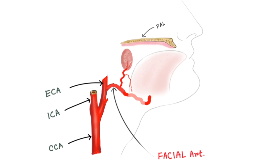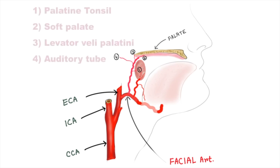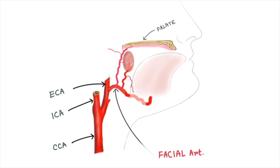The ascending palatine artery runs along the superior pharyngeal constrictor muscle up to the soft palate area and mainly supplies four important structures: the palatine tonsil, soft palate, levator veli palatini muscle, and the auditory tube.